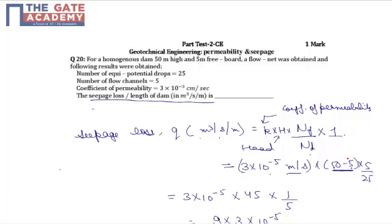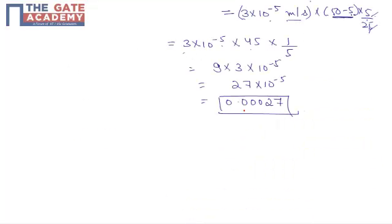Number of flow lines nf equals 5, and number of potential drops equals 25. The formula reduces to 3×10^-5 times 45 times 1/5, which equals 0.00027 meter cube per second per meter.